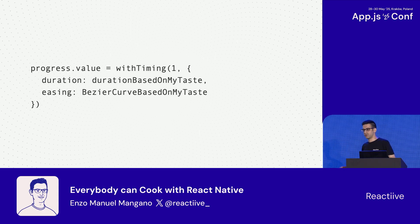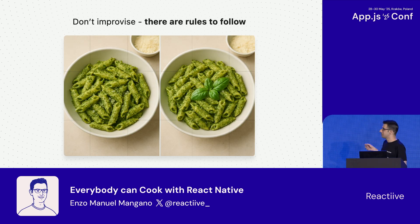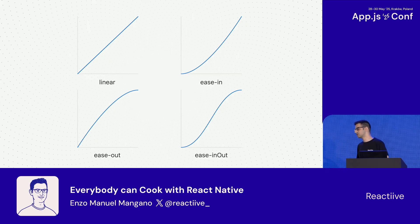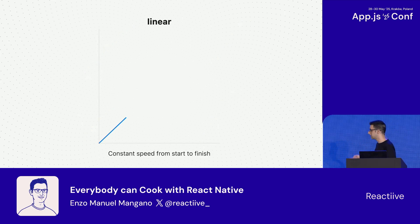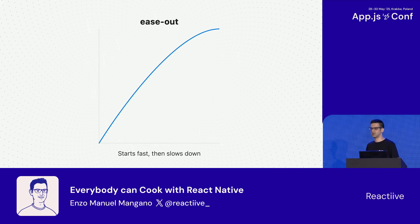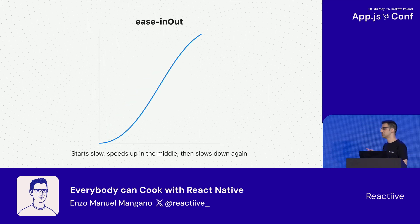There is something I learned recently that really changed how I was looking at animations: even if you want to place a leaf of basil on your pasta and pesto, you can't just throw it anywhere — there are rules you need to follow. So there must be rules to choose the proper easing. To fully understand these rules, let's have a quick overview of the four fundamental easings. We have linear, which has constant speed with no acceleration or deceleration. We have ease in, which starts slow then speeds up. We have ease out, which starts fast then slows down. And of course, ease in-out, which is a combination — starts slow, accelerates, and finally decelerates.